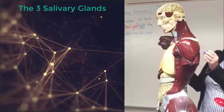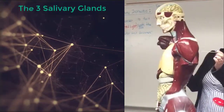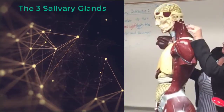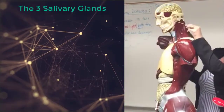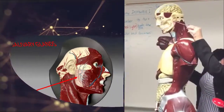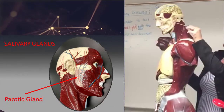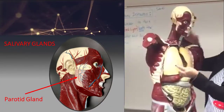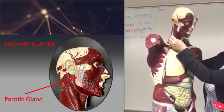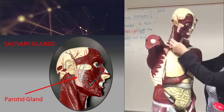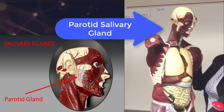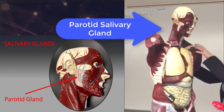There are three salivary glands, and one of them is on the outside of the cheek. This is the parotid gland — more of it is exposed over here. This is the parotid gland; it is a salivary gland, and you have three of them.